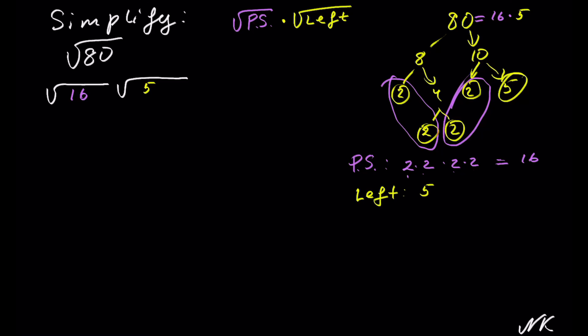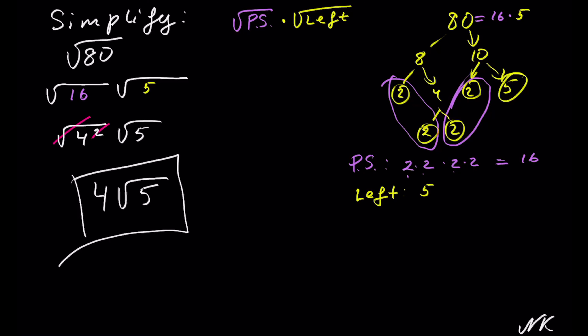Whatever is left over goes on the right. So now we have square root of 16 times square root of 5. Let's rewrite 16 as 4 to the second power. Square root of 4 to the second times square root of 5 — the square root and the second power cancel because they are inverses. We get 4 times radical 5, so 4√5 is our solution.